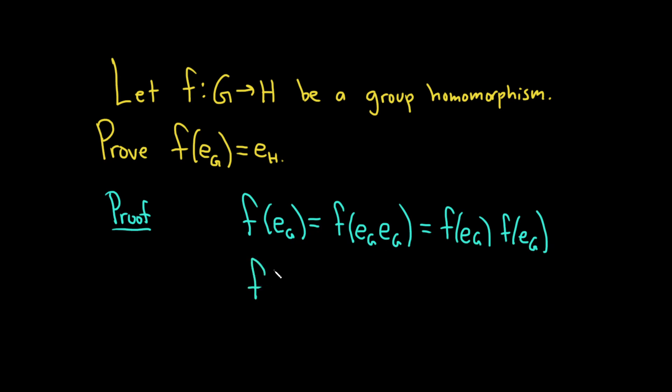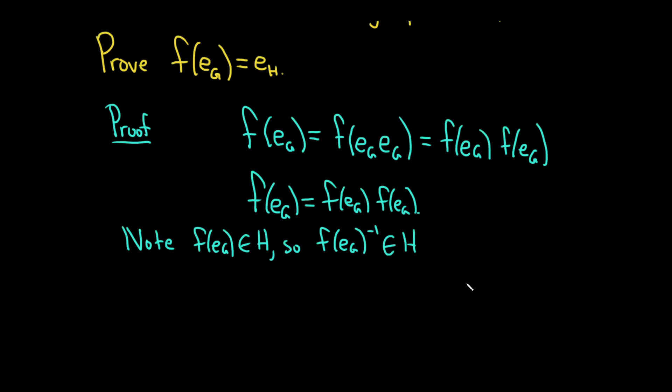Now we have the equation f of e_G equals f of e sub G times f of e sub G. Note that H is a group, and f of e sub G is an element in H. This element exists in H because H is a group and it's closed under inverses.